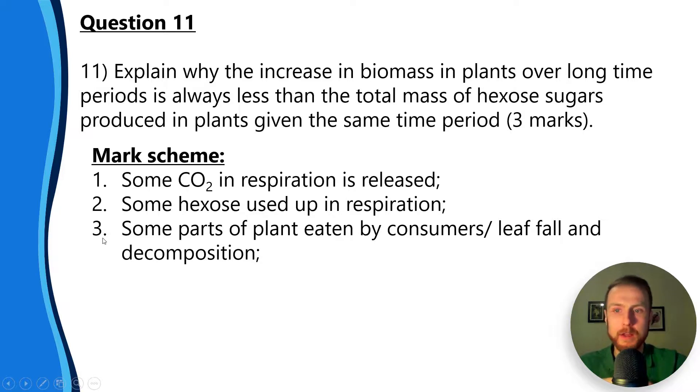Number two: some hexose is used up in respiration. So six-carbon sugars - you could have said some glucose is used up. Number three: some parts of the plant are eaten by consumers, or during autumn periods because of abscisic acid leaf fall occurs, or decomposition for example.